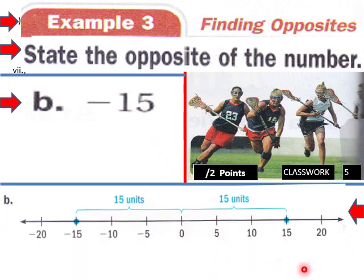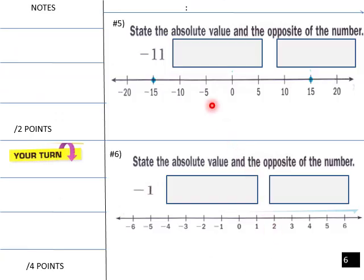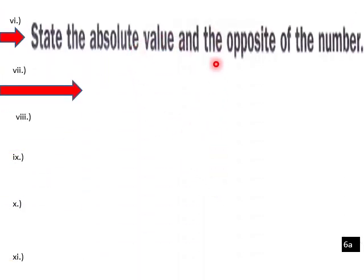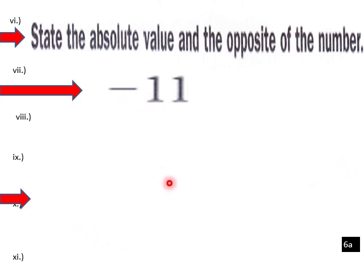Let's go into guided practice. State the absolute value and the opposite of the number. What's the absolute value and opposite of negative 11? The distance between negative 11 and zero is 11, so the absolute value of negative 11 is 11. The opposite of negative 11 would be positive 11.